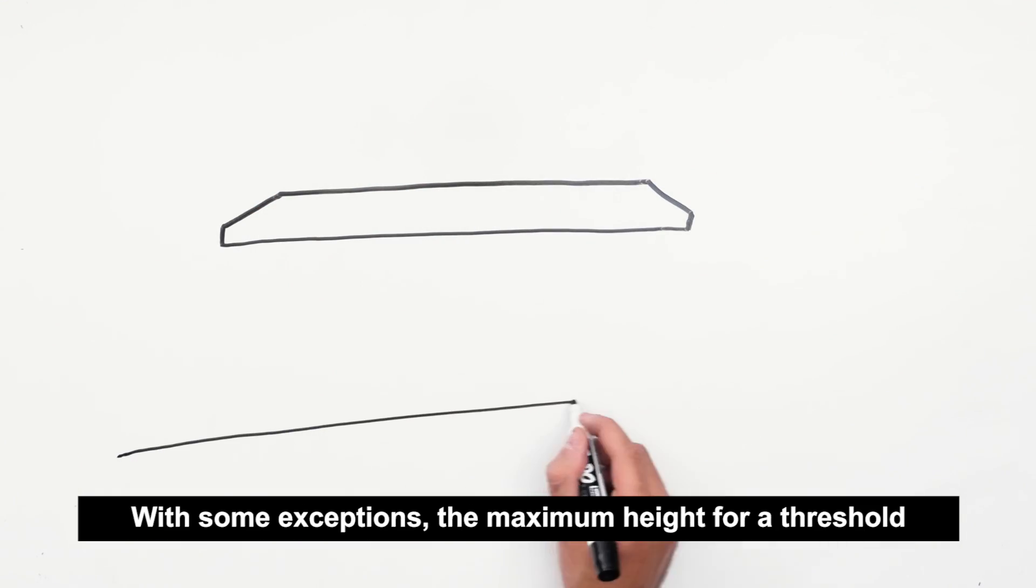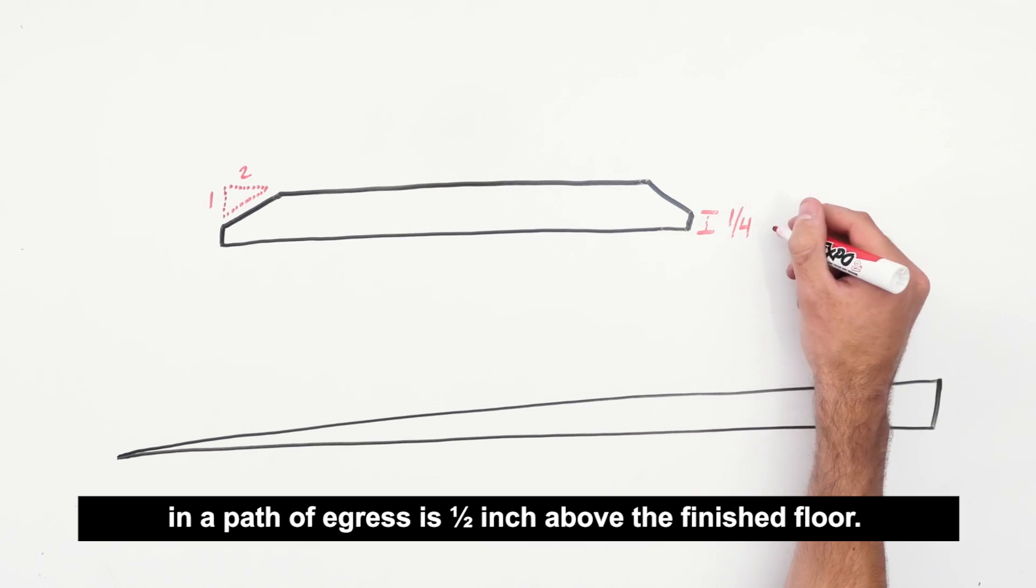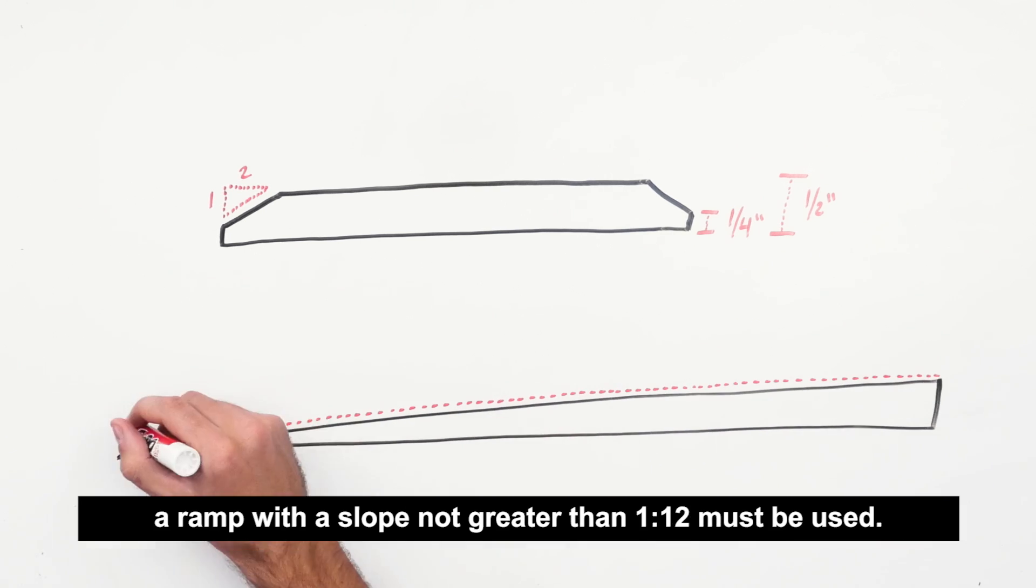With some exceptions, the maximum height for a threshold in a path of egress is one half inch above the finished floor. A rise of up to one quarter inch may be vertical, and a rise of one quarter inch to one half inch must have a slope not greater than one to two. If the rise is more than one half inch, a ramp with a slope not greater than one to twelve must be used.